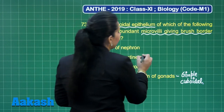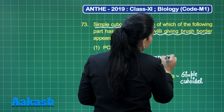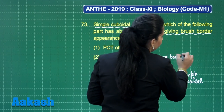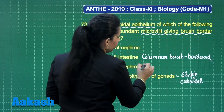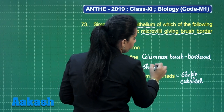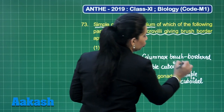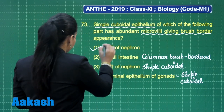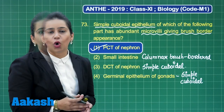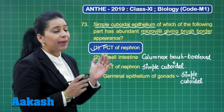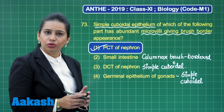While the small intestine has brush-bordered epithelium, it is not cuboidal — it has columnar brush-bordered epithelium. The DCT of nephron has simple cuboidal epithelium but with only a few microvilli. So the correct answer to this question is clearly option number one — PCT of nephron — as maximum absorption in our kidneys occurs in the PCT of nephron. Let us move to another question.